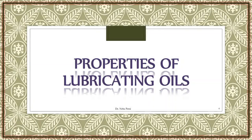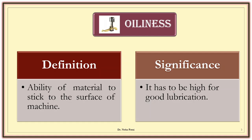Coming to the properties of lubricating oil. Up till now we have seen the properties of semi-solid lubricant. Now we will go with the liquid lubricant. The first property is oiliness — it is basically the stickiness, the ability with which it sticks to the surface. Obviously it should be high; it should stick to the surface in order to provide good lubrication.